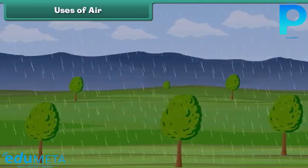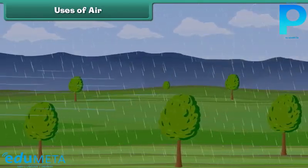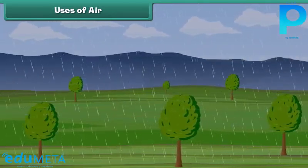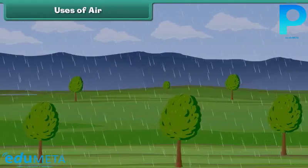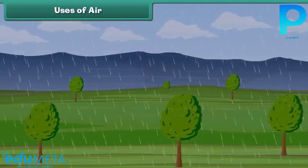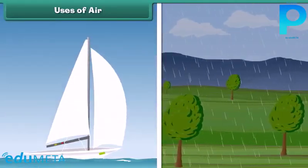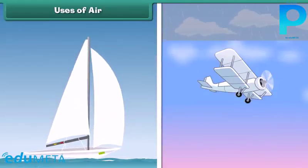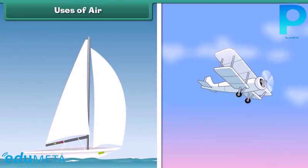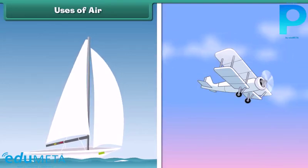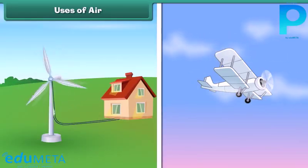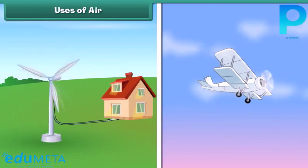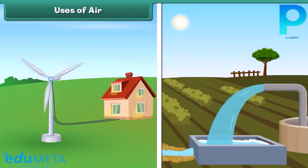Moving air is known as wind. Wind moves clouds and causes rain. Wind helps sailboats and gliders to move. The power of wind is also used to generate electricity and to pump water.